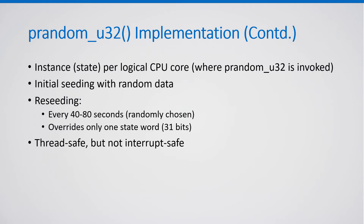pRandomU32 has an instance or state per logical CPU core. When a kernel thread invokes pRandomU32, the code uses the instance that belongs to the core on which it currently runs. The initial seeding has all four words populated with random data, but reseeding, which takes place every 40 to 80 seconds, overrides only the first state word — nominally 32 bits and effectively 31 state bits. The implementation is thread-safe but not interrupt-safe.